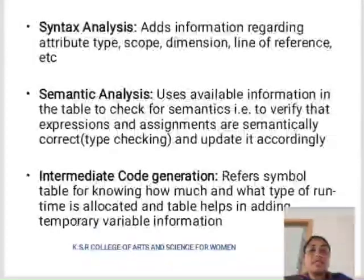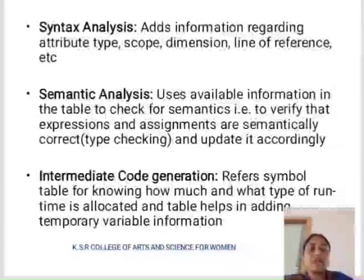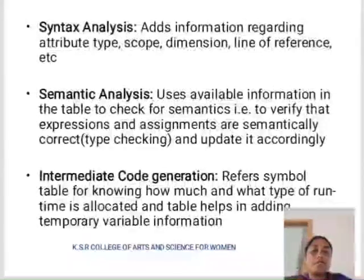Next one is intermediate code generation. It refers to the symbol table for knowing how much and what type of runtime is allocated, and the table helps in adding temporary available information.